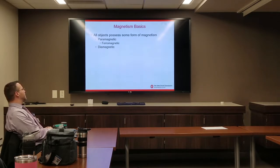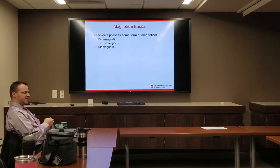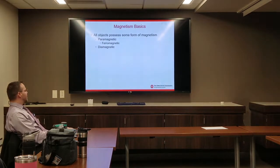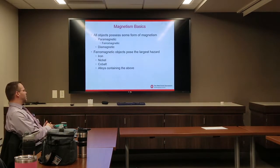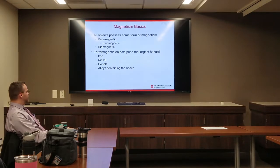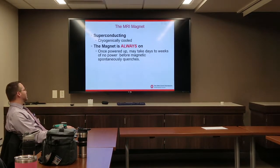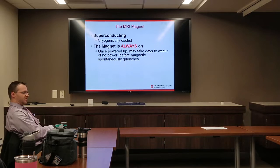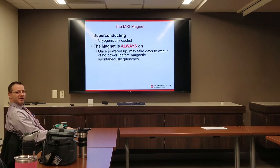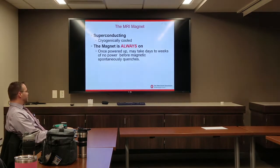Some basics of magnetism: all objects possess some form of magnetism — they could be ferromagnetic (a subclass of which is paramagnetism, our primary concern) or diamagnetic. Ferromagnetic objects pose the largest hazard — anything made of iron, nickel, cobalt, or alloys containing those metals are ferromagnetic. The MR magnet is a superconducting, cryogenically cooled magnet. It is not off at any time — it is always on, unless you hit the quench button or there's a spontaneous quench. Always assume it's on unless you know otherwise.